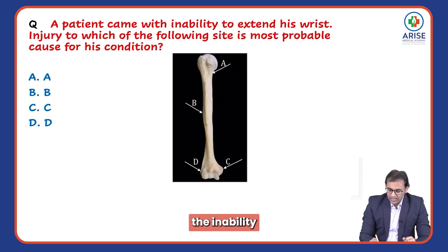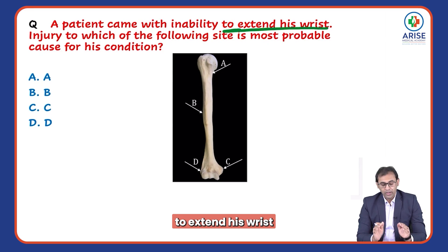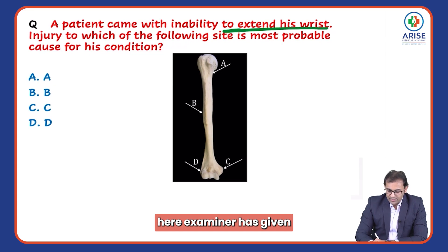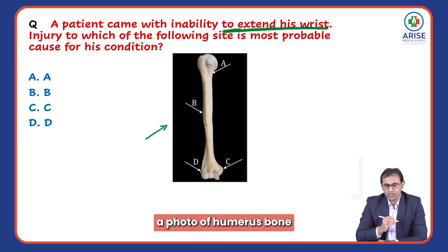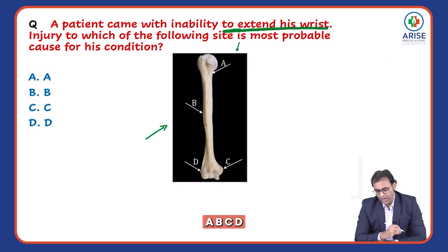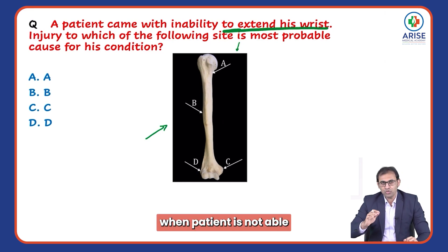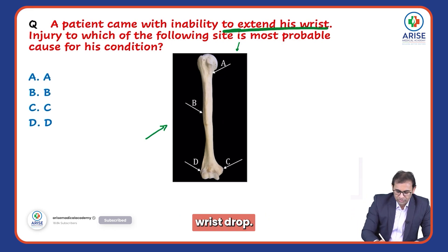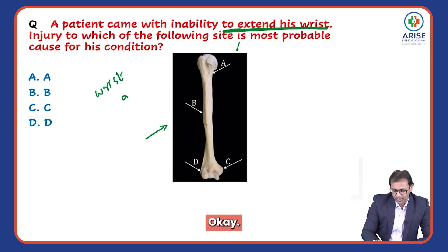A patient came with inability to extend his wrist. Injury to which of the following site is the most probable cause for his condition? The examiner has given a photo of the humerus bone with markings A, B, C, D. When a patient is not able to extend his wrist, this is a case of wrist drop.